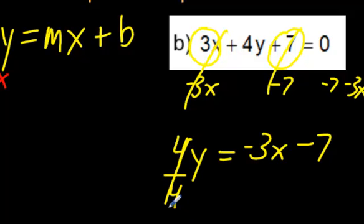4 divided by 4 is 1. So we're left with just a y. But remember when you divide, you divide everything on the other side as well. So divide that by 4. Divide this by 4. What are you left with?